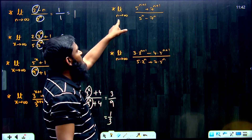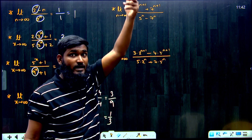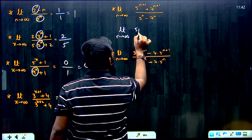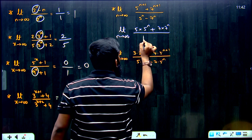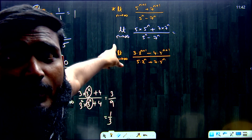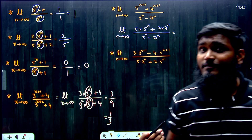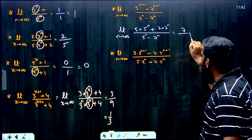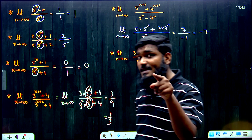Next question: limit n tends to infinity of (5^(n+1) + 7^(n+1)) / (5^n - 7^n). Simplify: 5^(n+1) = 5·5^n and 7^(n+1) = 7·7^n. The highest base term from 5^n and 7^n is 7^n. Coefficient of 7^n in numerator is 7. Coefficient of 7^n in denominator is -1. So the answer is 7 divided by -1, which is minus 7.